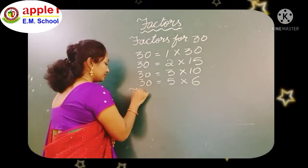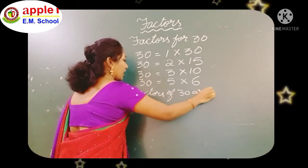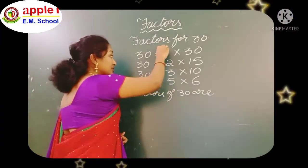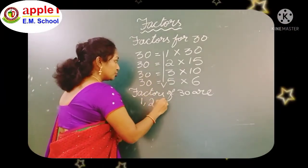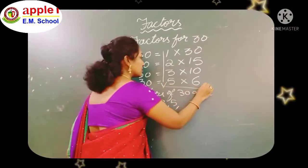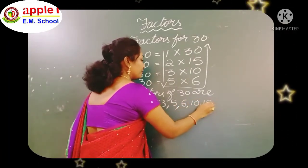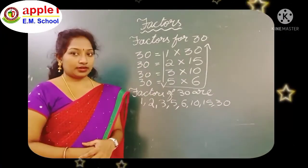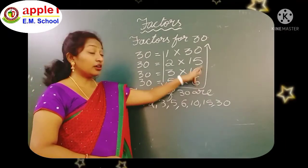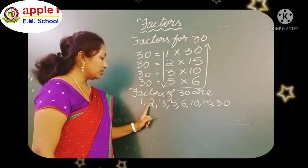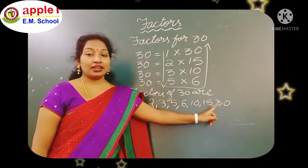Factors of 30 — how to write them? First, write top to bottom: 1, 2, 3, 5. Next, write bottom to top: 6, 10, 15, 30. Like a U-shape — first write top to bottom, then write bottom to top. So the factors of 30 are: 1, 2, 3, 5, 6, 10, 15, and 30.